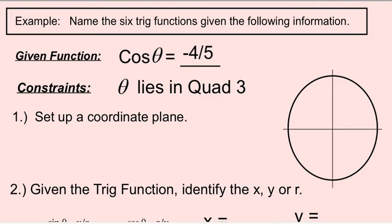So here's what we give you — this is what I do want you to write down as this example. Name the six trig functions given the following information. We give you that the cosine of theta is negative four-fifths, and that the angle lies in quadrant three.